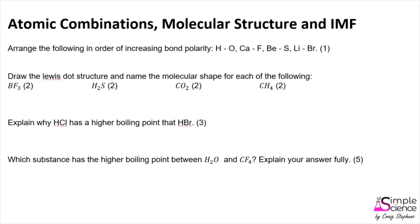In order to compare the bond polarity for various bonds, we need to start by calculating the electronegativity difference between all the atoms in those bonds. We start by writing down the electronegativity for each atom: hydrogen 2.1, oxygen 3.5, calcium 1.0, fluorine 4.0, beryllium 1.5, sulfur 2.5, lithium 1.0, and bromine 2.8.